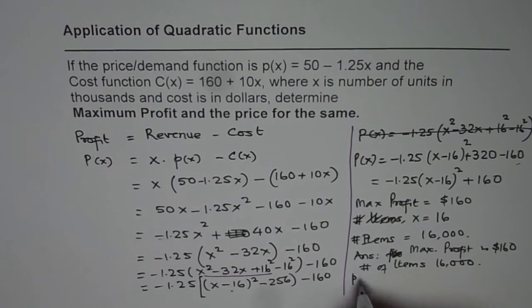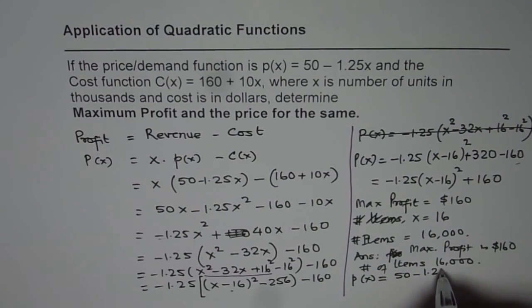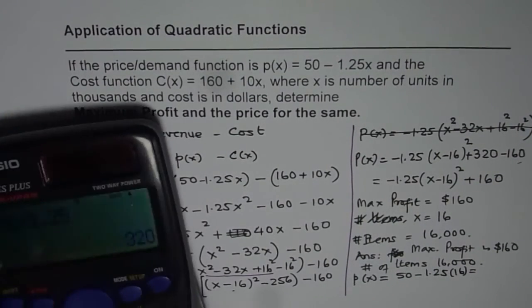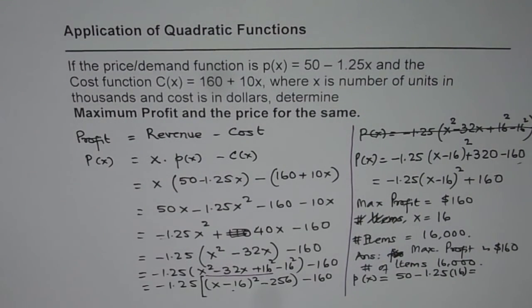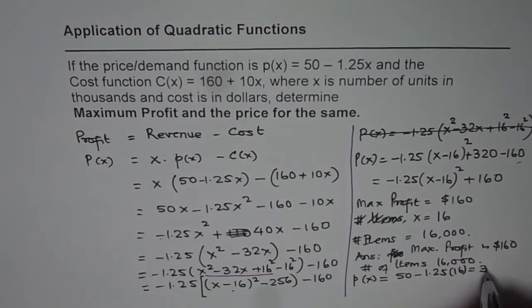And the price for the item, p of x, is equals to 50 minus 1.25 times 16. So this is 50 minus 1.25 times 16, and that is equals to 30. So that is $30.